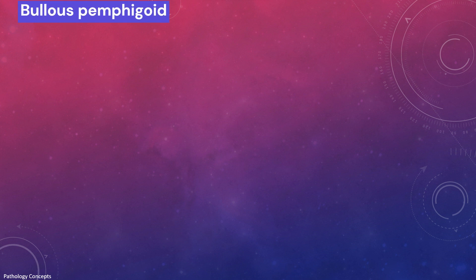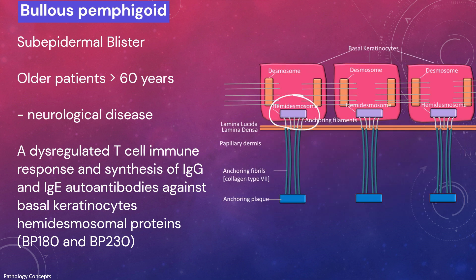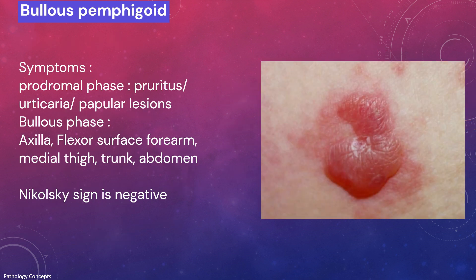Bullous pemphigoid occurs in older patients (more than 60 years) and is more prevalent in patients with neurological disease such as stroke, dementia, and Parkinson's disease. The pathology is a dysregulated T-cell immune response and synthesis of IgG and IgE autoantibodies against basal keratinocyte hemidesmosomal proteins such as BP-180 and BP-230. This leads to neutrophil chemotaxis and degradation of the basement membrane zone.